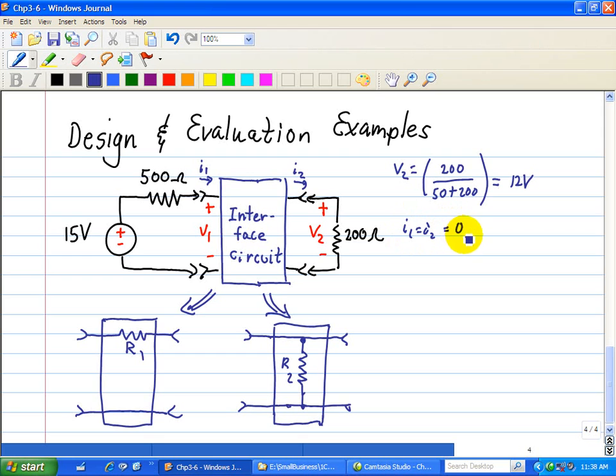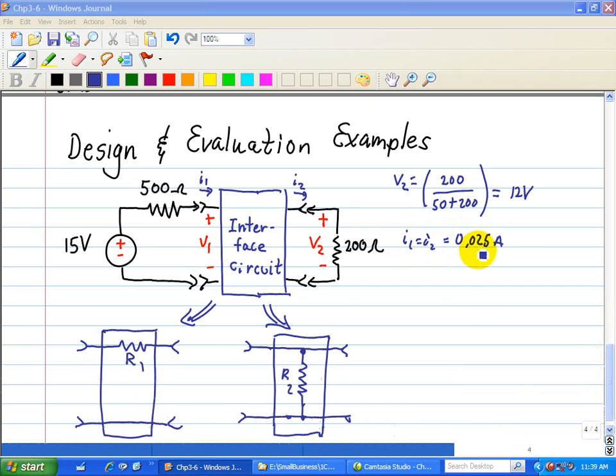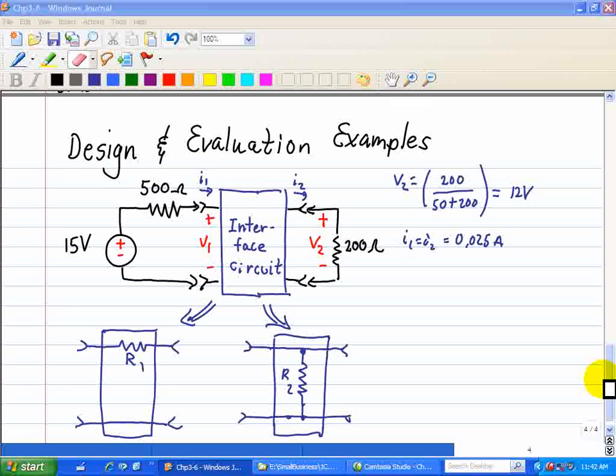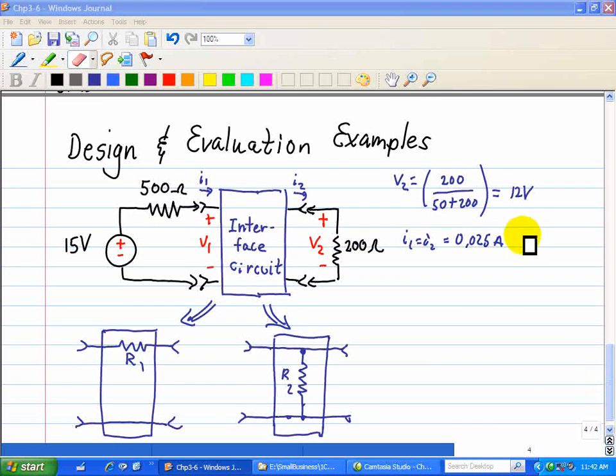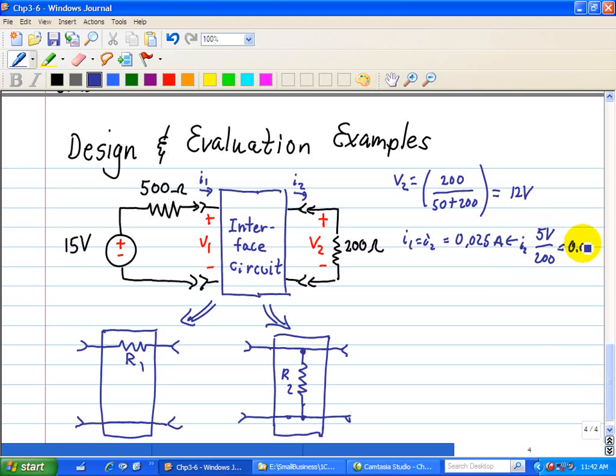and in this case, that's equal to 0.025 amps. This calculation is a result of taking the 5 volts and dividing it by the 200 ohm resistor using Ohm's law. In other words, using Ohm's law, 5 volts divided by 200 equals 0.025 amps.